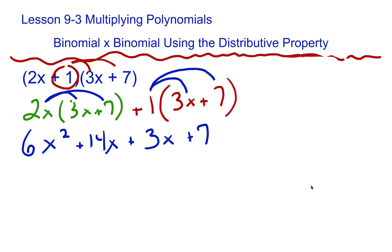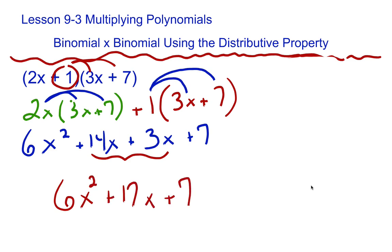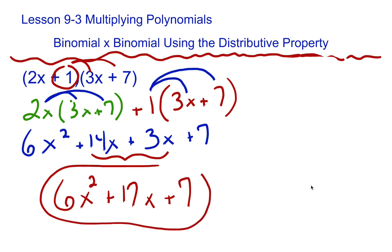The last step is to combine any like terms. We notice that 14x plus 3x can be combined, giving us a final answer of 6x squared plus 17x plus 7. This is our multiplication answer.